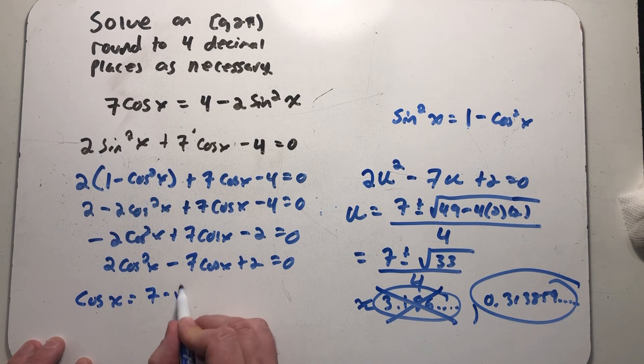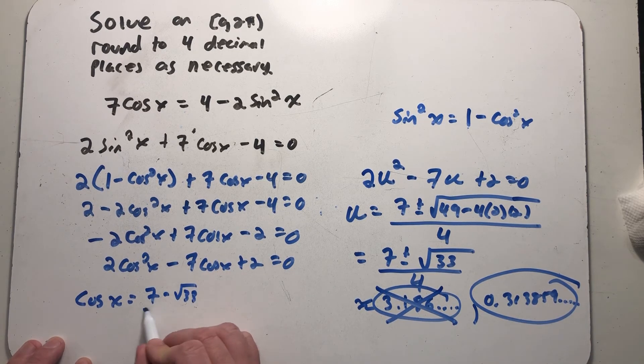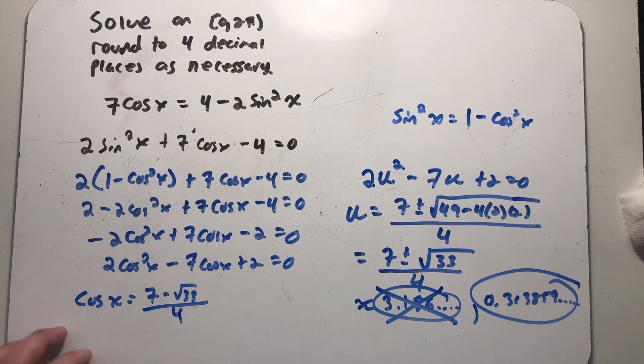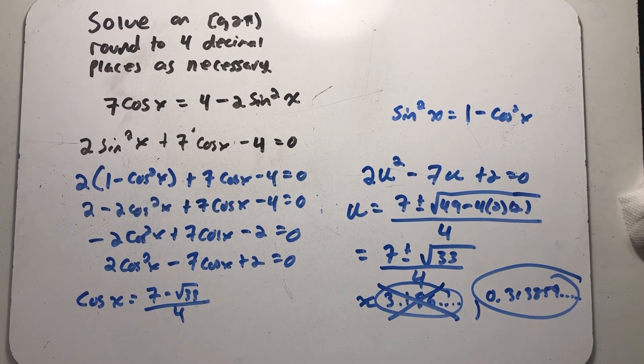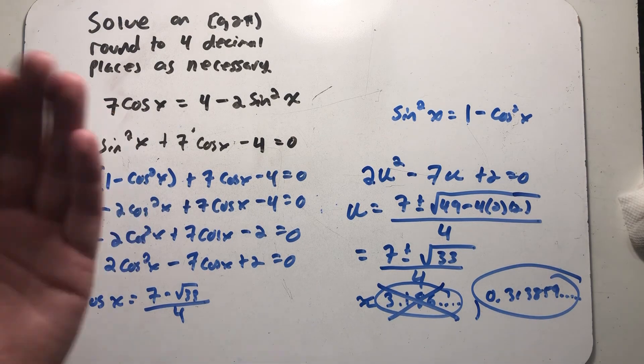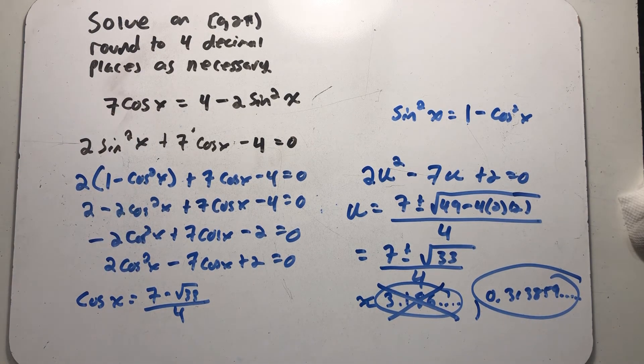But I don't want to approximate yet. Cosine x is equal to 7 minus the square root of 33 all over 4, which is about 0.31 something. And so that's possible. There should be two solutions on my unit circle where that happens. And I know that's a positive value. So x is either in the first quadrant or fourth quadrant where cosine is positive.